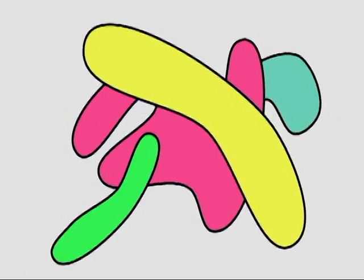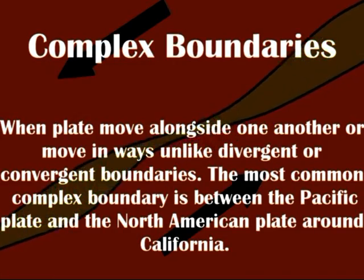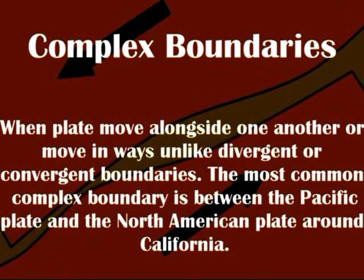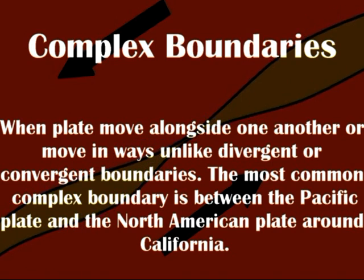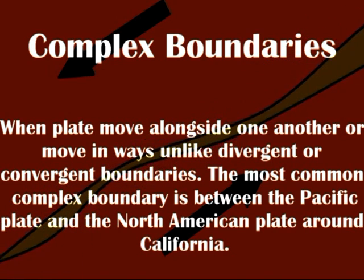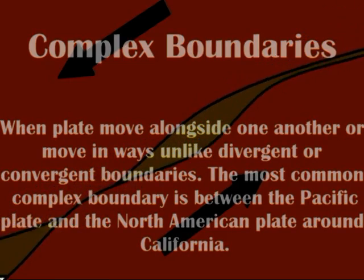Complex boundaries are where the two plates can move along one another in any number of ways. The most common complex boundary is between the North American plate and the Pacific plate along California. Here's a simple animation showing the general way that they move — kind of sliding up against one another.